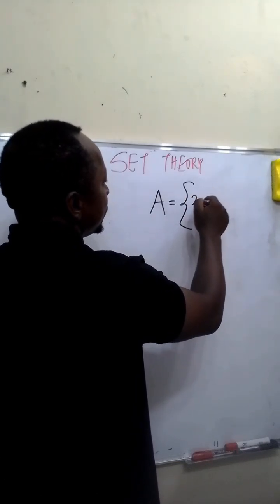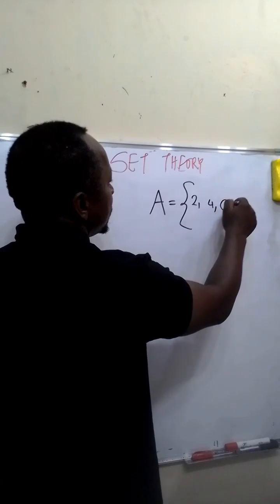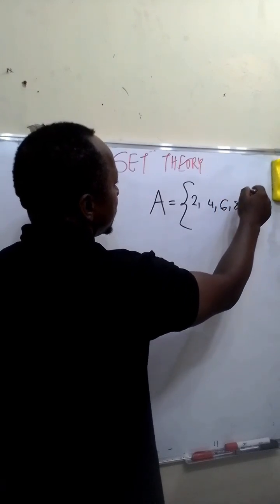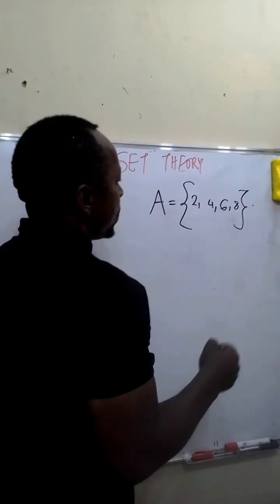The even numbers less than 10 are 2, 4, 6, and 8. We close it with a curly bracket.